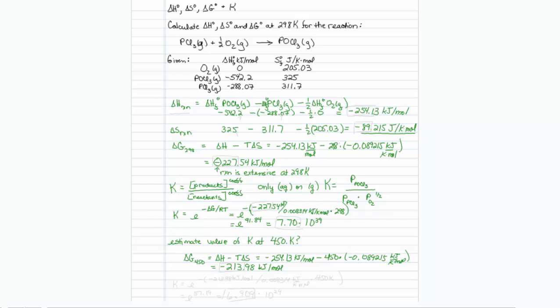And my delta G at 450 turns out to be a minus 213.98 kilojoules per mole. So you notice that's a little bit smaller value than before, less negative anyway, for delta G. So our reaction is getting less extensive, but still product is preferred.